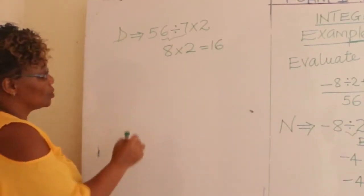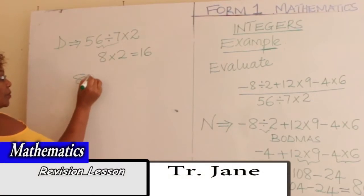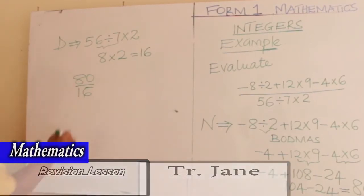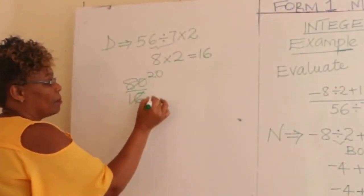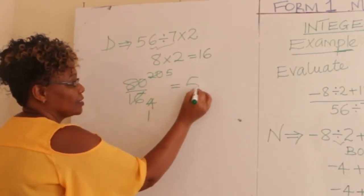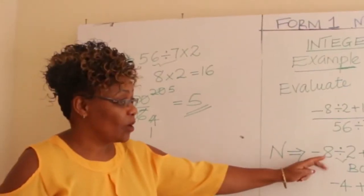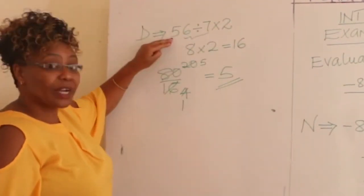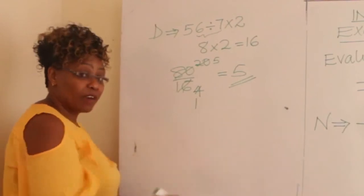The numerator gave us 80 and the denominator gave us 16. We work this out — we can cancel by 4: 80 over 16 simplifies to 5 over 1, so the answer is 5. You take one step at a time — apply BODMAS to the numerator, then the denominator, then divide the two.